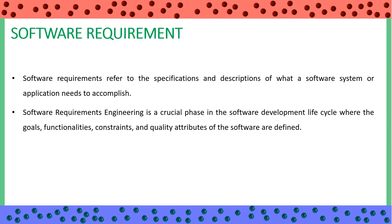First of all we will see what are software requirements. Software requirements refer to the specifications and descriptions of what a software system or application needs to accomplish. Software requirements engineering is a crucial phase in the software development life cycle where the goals, functionalities, constraints, and quality attributes of the software are defined. Without fulfilling any system requirements, no system can work properly.